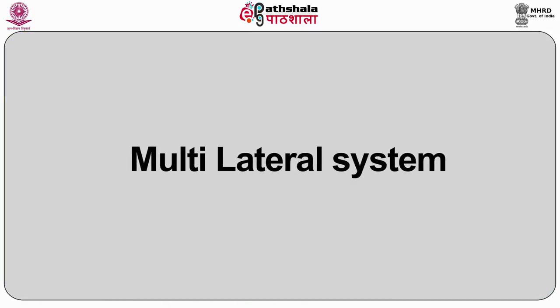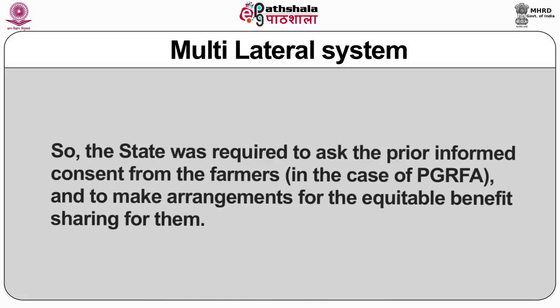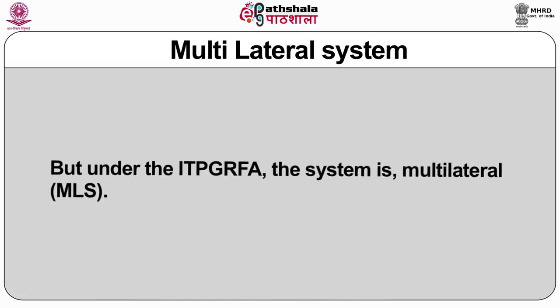We would now understand the multilateral system. Under the Convention on Biodiversity (CBD), the system of benefit sharing was bilateral — it was a dealing between the persons who seek access to the plant genetic resource and the state directly. The state was required to ask prior informed consent from the farmers in the case of plant genetic resources for food and agriculture and to make arrangements for equitable benefit sharing for them. But under the International Treaty for Plant Genetic Resources in Food and Agriculture, the system is multilateral.